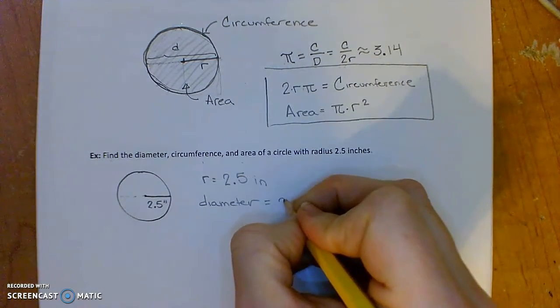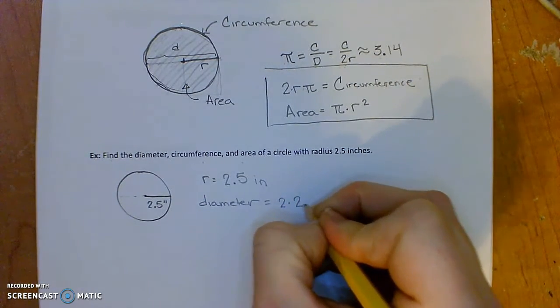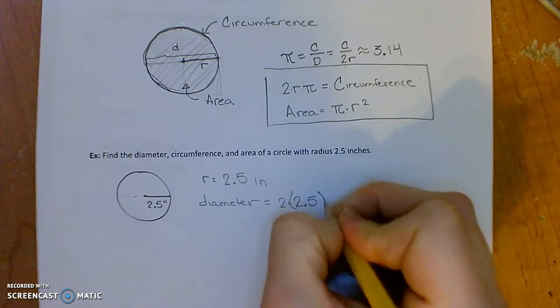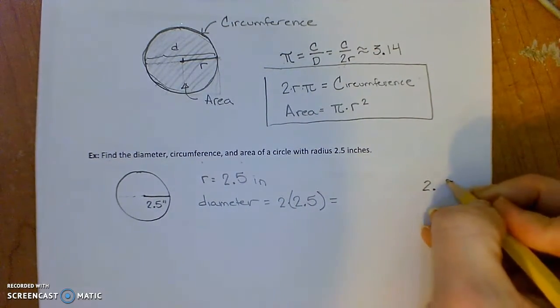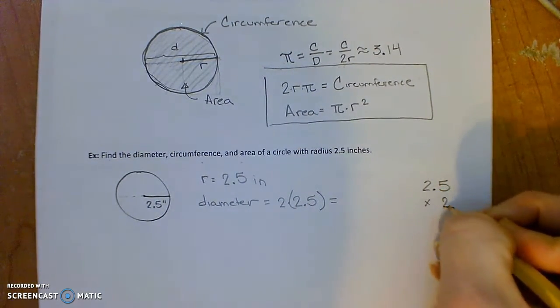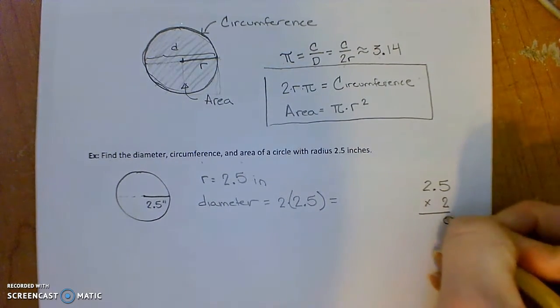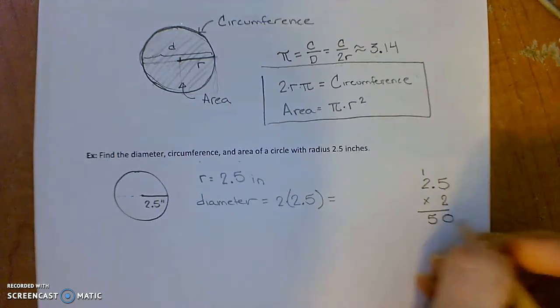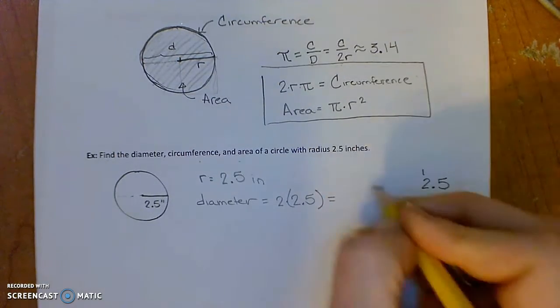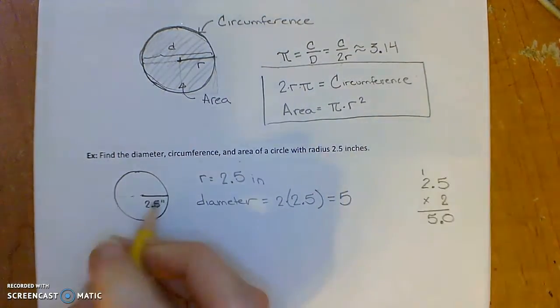The diameter is all the way across, so it will be 2.5 plus 2.5, so it's two groups of 2.5, so 2.5 times 2. I could do that on the side of my paper here. 2 times 5 is 10, 2 times 2 plus 1 is 5, and one place after the decimal, so it will be 5.